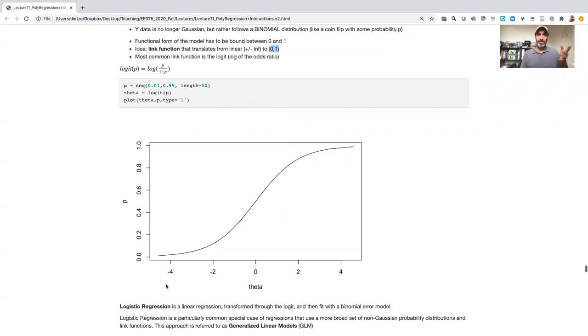And we can use a wider range of link functions other than just the logit. But the general idea of generalized linear models is this: use of a non-normal distribution and then use of a link function to relate the domain of that distribution to the linear domain of our linear model.